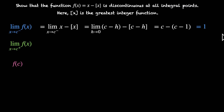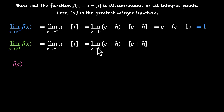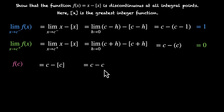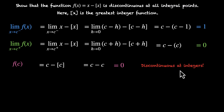The right-hand limit is limit x → c⁺ of (x − [x]). Substituting x = c + h, we get (c + h) − [c + h] = c − c = 0. The value of the function at c is f(c) = c − [c] = c − c = 0. Since the left-hand limit is 1 but the right-hand limit is 0, the limits don't match, so the function is discontinuous at all integers.